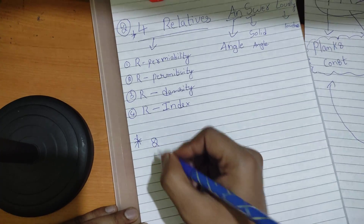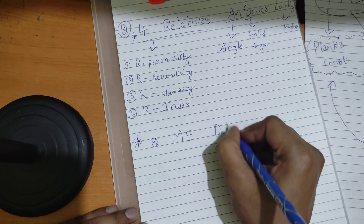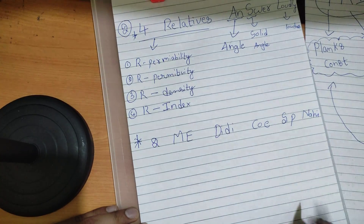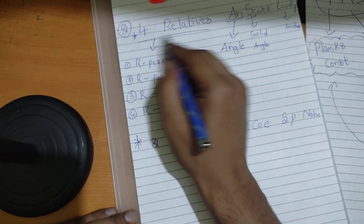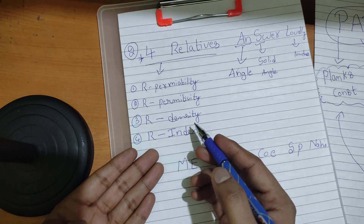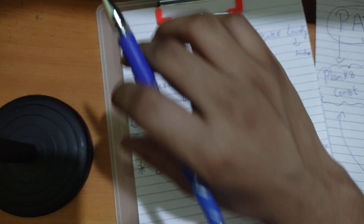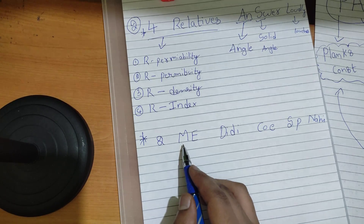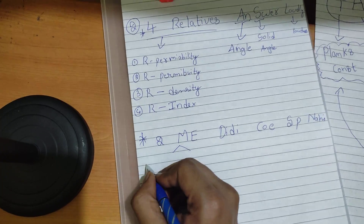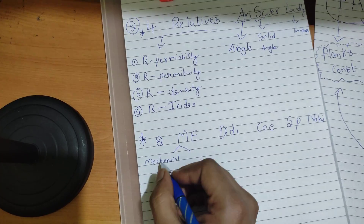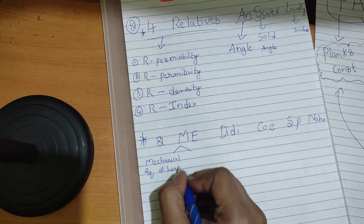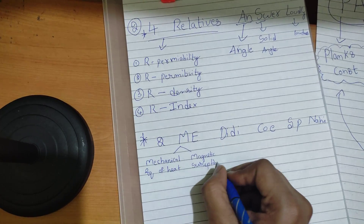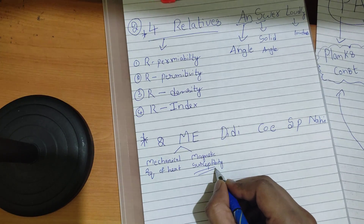Another mnemonic we have is: 'to me didi koi sp nahi.' Here, 'to me' means there should be two quantities starting with M — mechanical equivalent of heat and magnetic susceptibility. This will come across in magnetism in class 12.